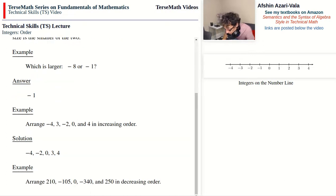Here is another example with larger numbers. Arrange 210, negative 105, 0, negative 340, and 250 in decreasing order. Now this time we have to go from largest to smallest because it's a decreasing order, which means as we go through the list the size of the numbers goes down, or we go towards smaller and smaller numbers.